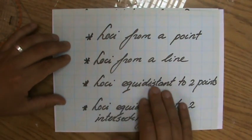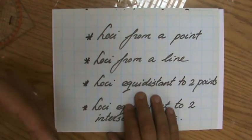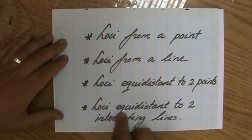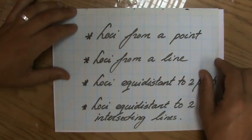You have the loci equidistant to two points, where equidistant means the exact same distance. And the loci equidistant to two intersecting lines.